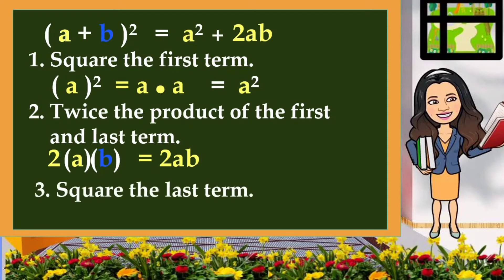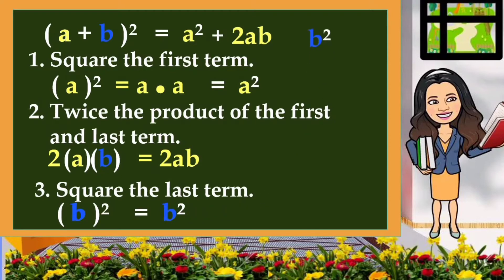The third step is: square the last term. Our last term is b. When we square b, that is the same as b times b, which is equivalent to b squared. And that is the last term of the result. Since that's positive, we add a plus sign to separate the terms. So this is the result of squaring a plus b: a squared plus 2ab plus b squared.